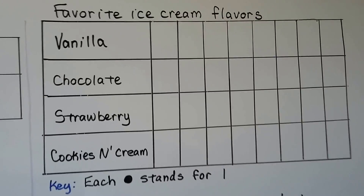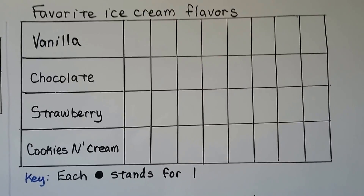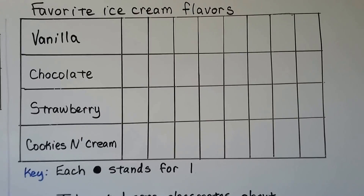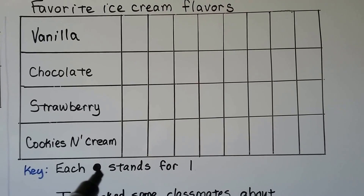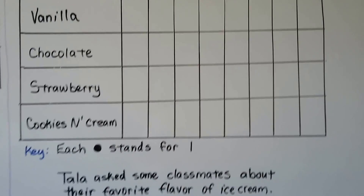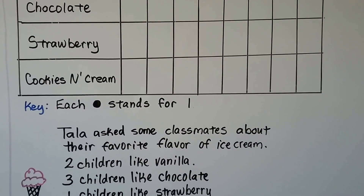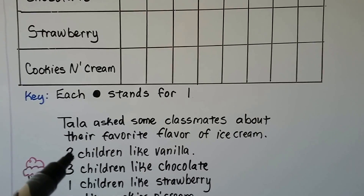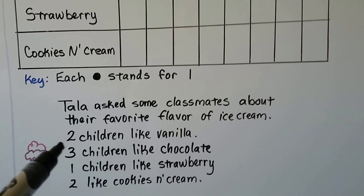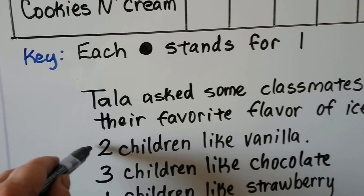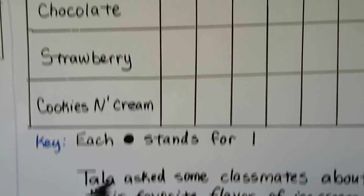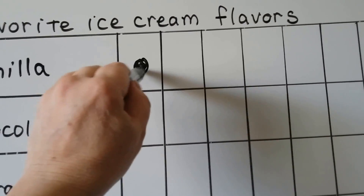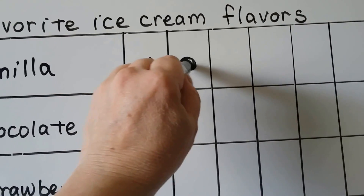Here's favorite ice cream flavors. We have vanilla, chocolate, strawberry, and cookies and cream. The key is that each black dot is going to stand for one. Two children like vanilla, so vanilla is going to get two dots. One, two. Two votes for vanilla.